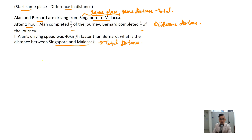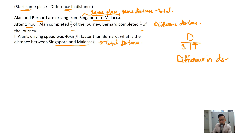Whenever you do a distance speed question, always write down the distance, speed and time triangle. Always write it down — this is the first thing you need to do whenever you are doing a distance speed time question. The second thing is to realize what kind of question this is. This is a 'start same place, difference in distance' question. So the formula is: difference in distance equals difference in speed times time. Write these two things out to reduce confusion later.